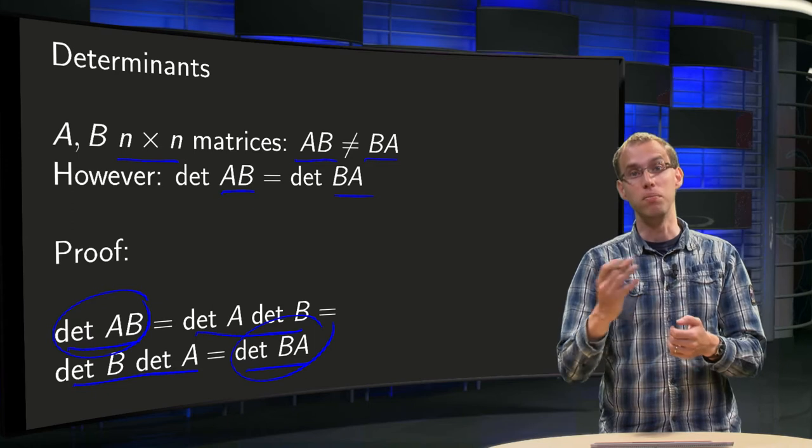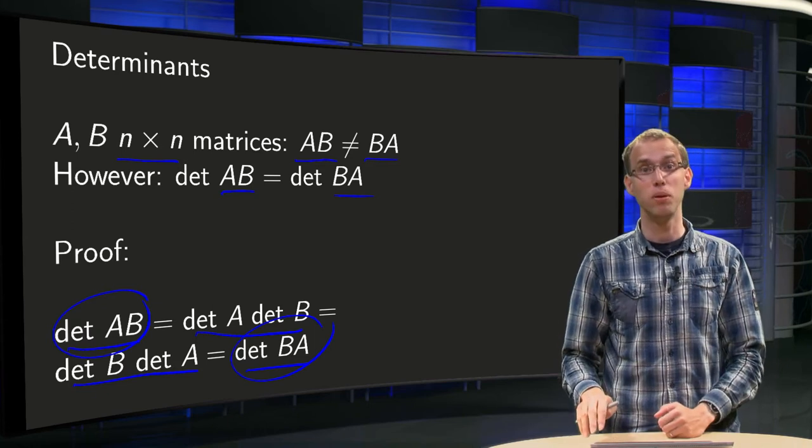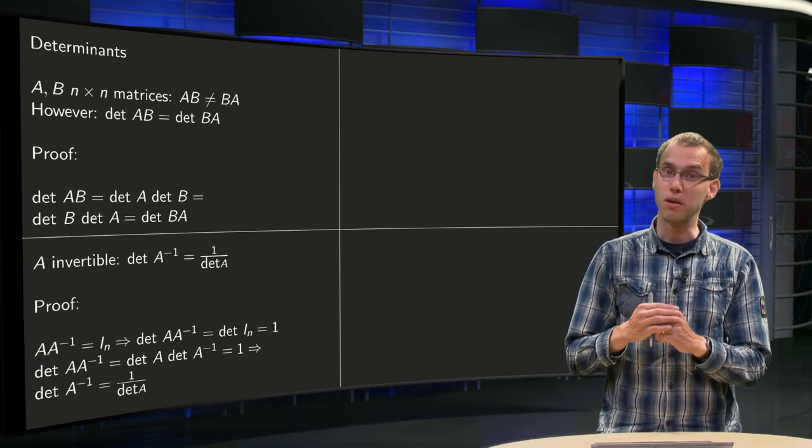So even though AB and BA are not the same, they are different matrices, their determinants are the same. Let's take a look at a second proof.